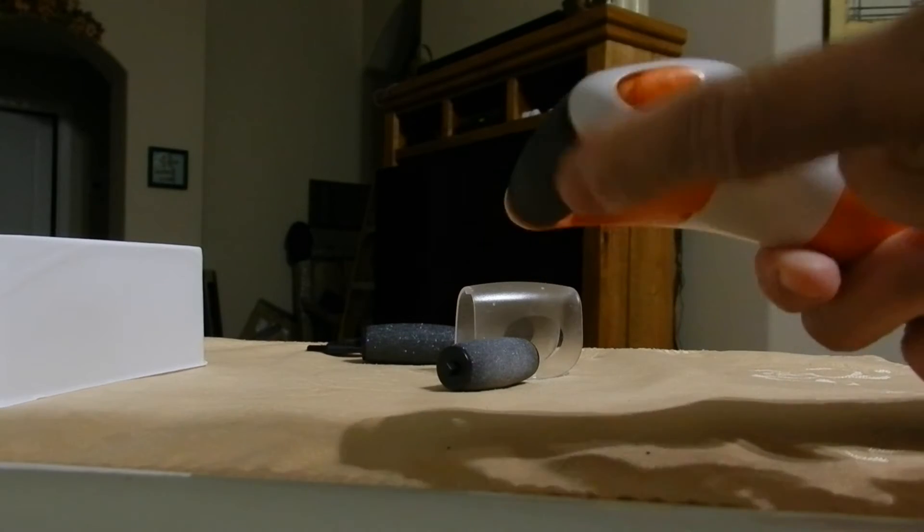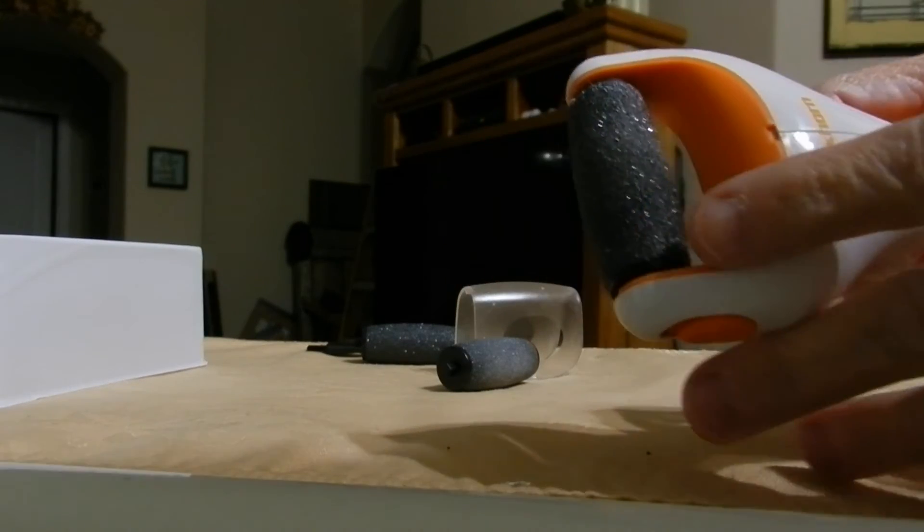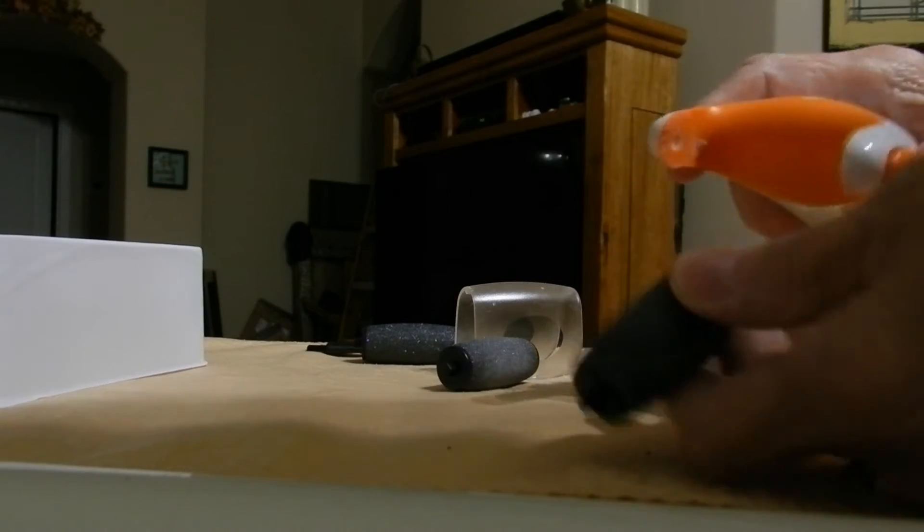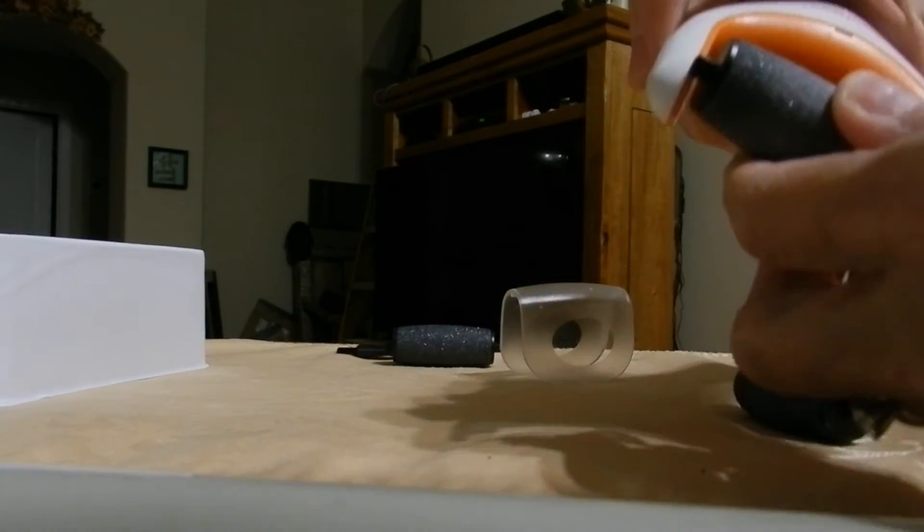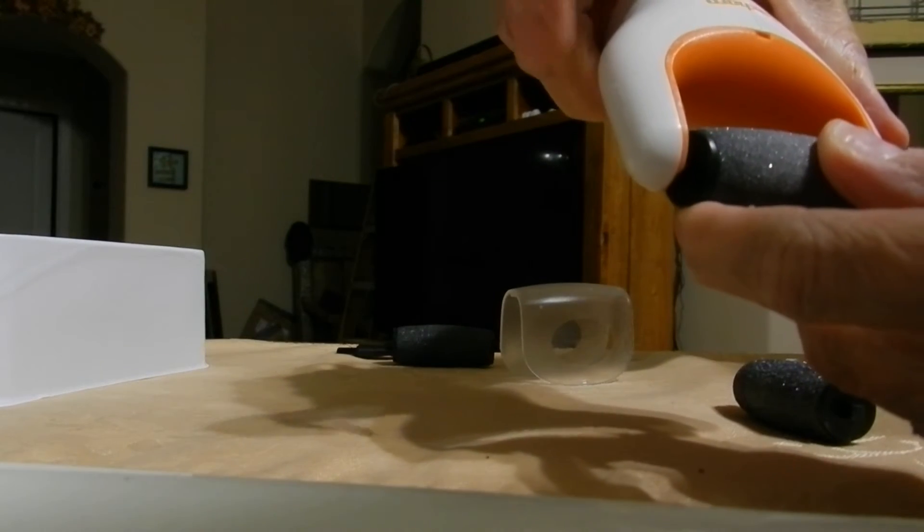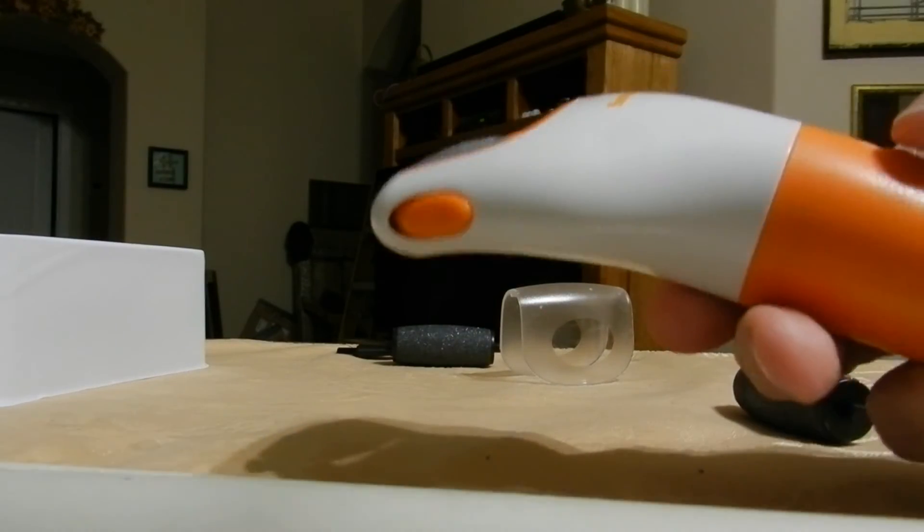So that is the coarse head. To change the roller head, you simply press this button in, put the one side in and then tap the other side in with your finger and it's locked in. Now this is a smooth one.